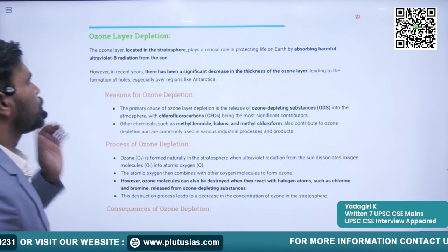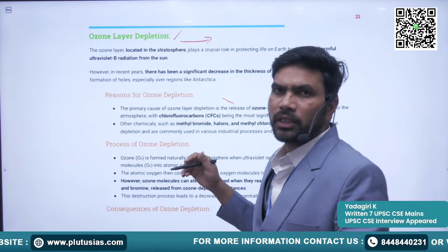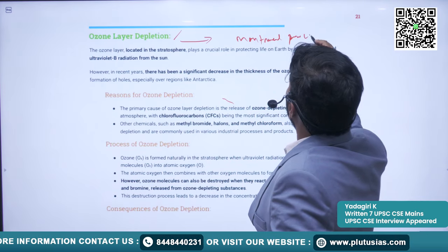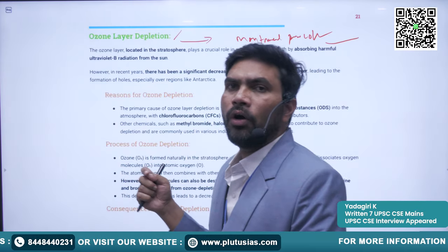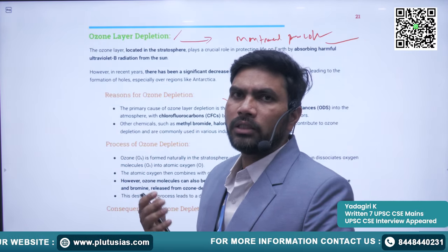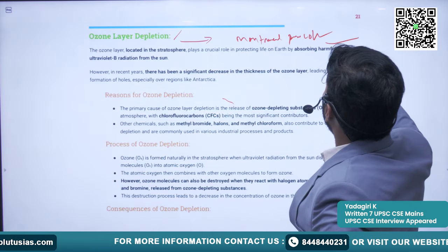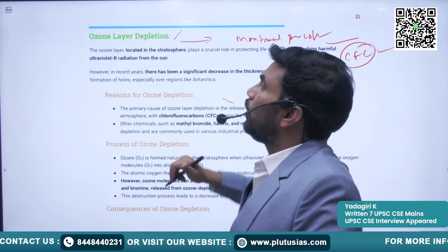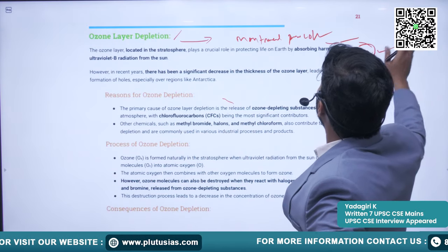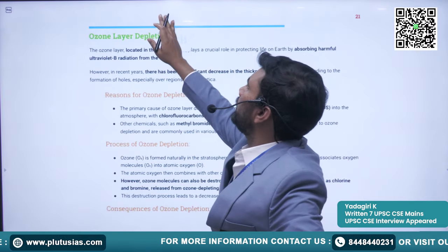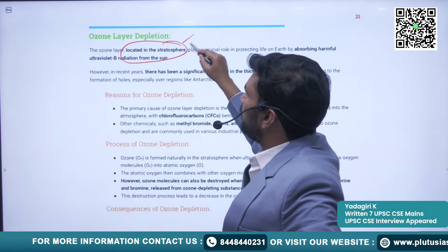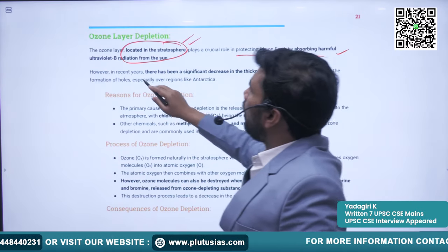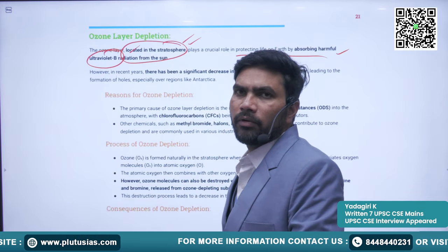The next important component is ozone layer depletion. The Montreal Protocol was adapted to fight the release of ozone-depleting substances, especially chlorofluorocarbons. The ozone layer is located in the stratosphere and plays a crucial role in protecting life on earth by absorbing harmful ultraviolet B radiation from the sun. Recently, there has been a significant decrease in the thickness of the ozone layer, leading to formation of holes in the ozone layer, especially over Antarctica.